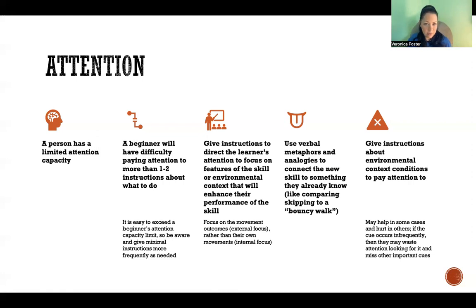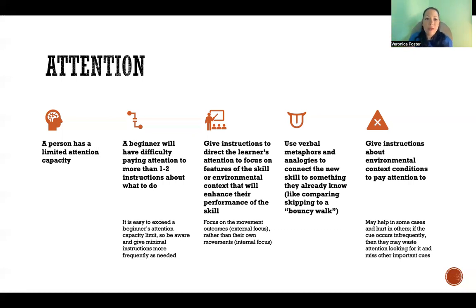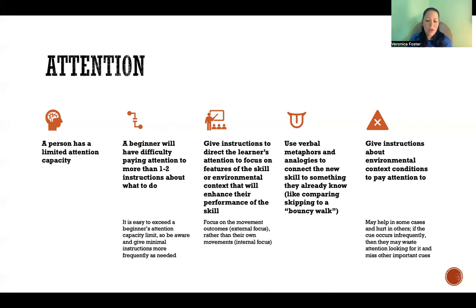It's helpful to give that kind of verbal instruction if the cue is something that's going to happen frequently in the environment. But it actually works against the learner if you're giving them information about something that happens infrequently. If you tell them to keep an eye out for something that only happens rarely, they may spend a lot of attention looking for that rare thing and miss everything else they should be attending to. So be careful about what you tell a beginner to look for — make sure it's frequent enough to be worth their limited attention.